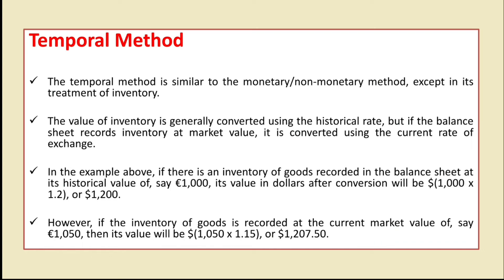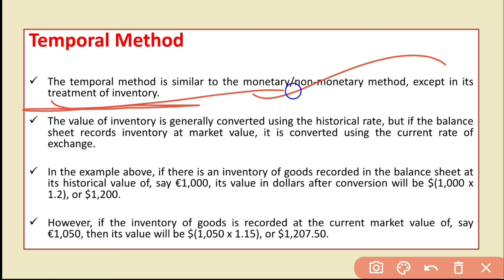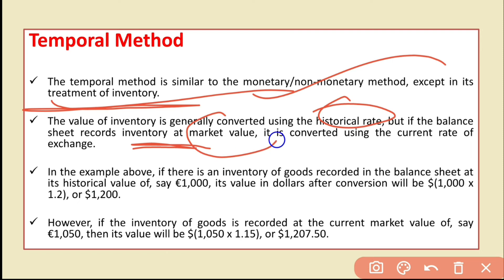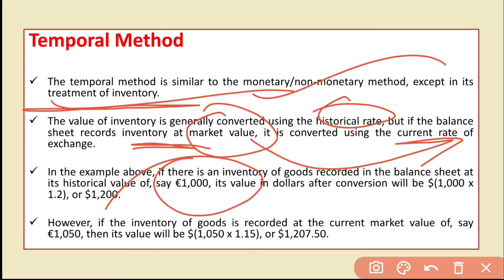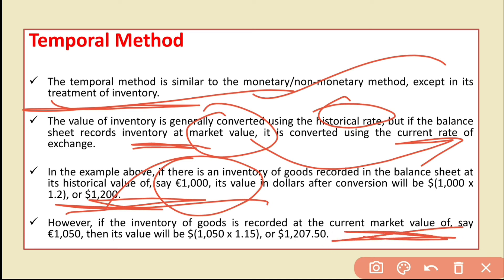The temporal method is the same as the monetary/non-monetary method, except for its treatment of inventory. The value of inventory is generally taken at the historical rate, but if the inventory is measured at market value in the books, then it is converted at the current rate. So if inventory is recorded in the books at 1,000 euros at cost, the historical rate is used; if it is recorded at market value, the current rate is used.